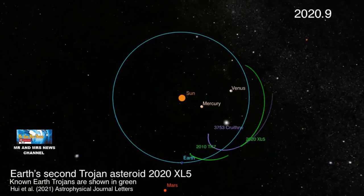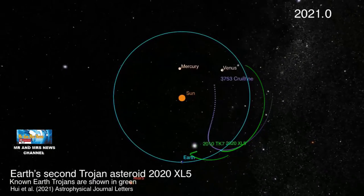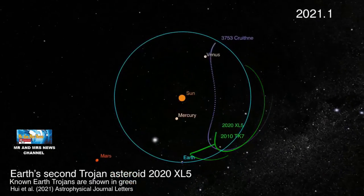Sepanjang sejarah, ini baru kedua kalinya tercatat ada asteroid yang berada di orbit bumi.